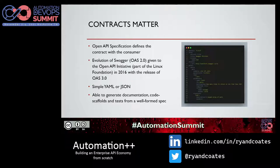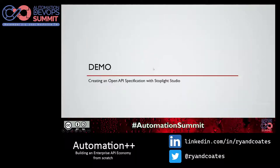From a user perspective, being able to understand that contract and understand if and when it changes is a critical thing to enable customer satisfaction. Let's go into a quick demo and talk about what that actually looks like from a consumer perspective — how to author an OpenAPI spec. We're going to use a tool called Stoplight Studio.